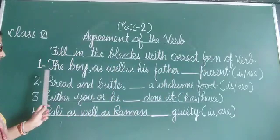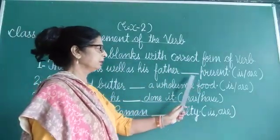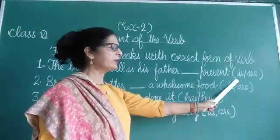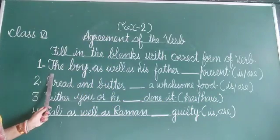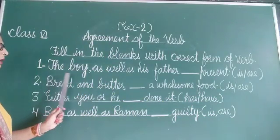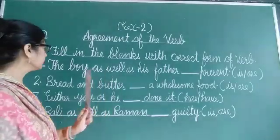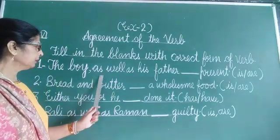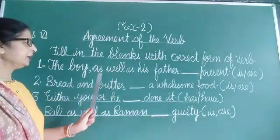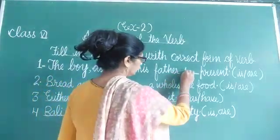First sentence is: the boy as well as his father __ present. The options are 'is' and 'are'. Now I am telling you, if you are getting two subjects joined with the words 'as well as', then the verb we put there is in the singular form.